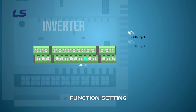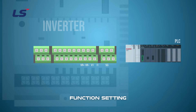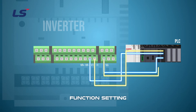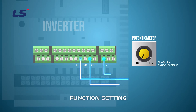There are VR plus, VR minus, V1, I1, and 5G terminals for analog input related terminals. VR plus terminal is the 0 to +10V input terminal. VR minus is the 0 to -10V input terminal. V1 terminal is the analog voltage input terminal. I1 is the analog current input terminal. 5G is the common terminal for analog input/output. When using an external device for voltage, use V1 and 5G terminals. When using a current device, use I1 and 5G terminals for wiring. When using the inverter's internal power, wire the volume resistance between 1 to 5 kilo ohms to VR plus, V1, and 5G.